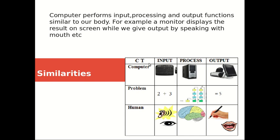You can see in this slide there are similarities. Computer has an input device, CPU processes it, and the output is generated on the monitor. For example, the problem is 2 plus 3. We enter on the keyboard: 2, then plus, then 3. The CPU processes it and the output result — 2 plus 3 equals 5 — is displayed on the monitor.